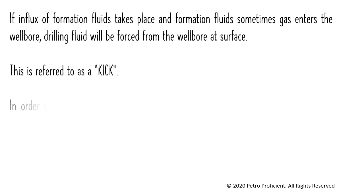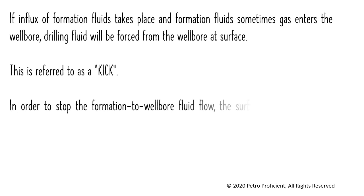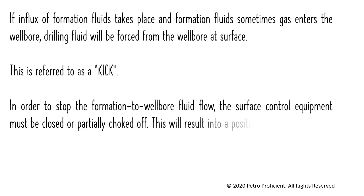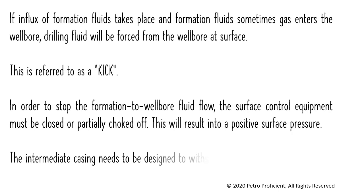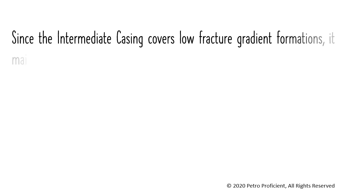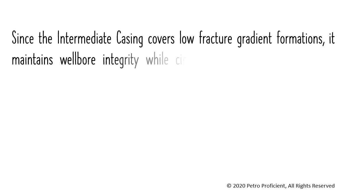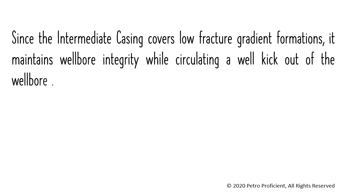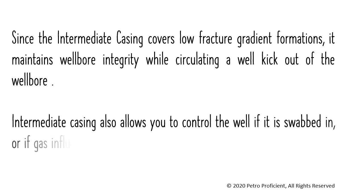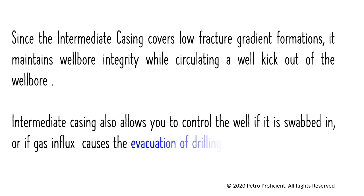This is referred to as a kick. In order to stop the formation-to-wellbore fluid flow, the surface control equipment must be closed or partially choked off. This results in a positive surface pressure. The intermediate casing needs to be designed to withstand the surface pressure during a kick. The intermediate casing covers low fracture gradient formations, maintains wellbore integrity while circulating a well kick out of the wellbore, and also allows you to control the well if it is swabbed in or if gas influx causes the evacuation of drilling fluids from the well.